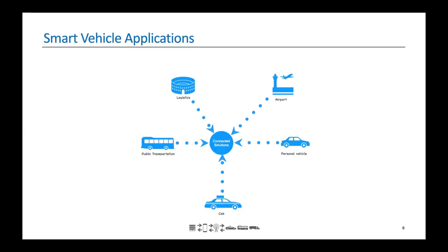Moving on to smart vehicle applications. This image gives us a quick look at what areas connected technology caters to. Smart vehicles have been growing pretty significantly in the personal vehicle space. There is also a lot of growth in fleet vehicles or robot taxis. Going forward, we would also see smart vehicle applications in public transportation, logistics at large events such as the Olympics, as well as feeder services at airports.